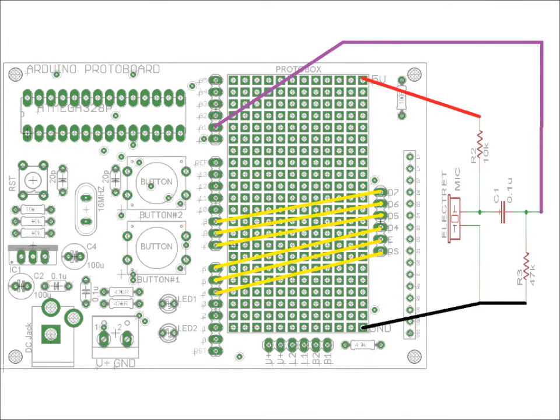The connections are similar to our last videos, which again can be found below. We've got the top of the 10k ohm resistor connected to the 5-volt line on the protobox. We've got the two ground connections from the mic and the 47k ohm resistor connected together to the ground rail on the protobox.